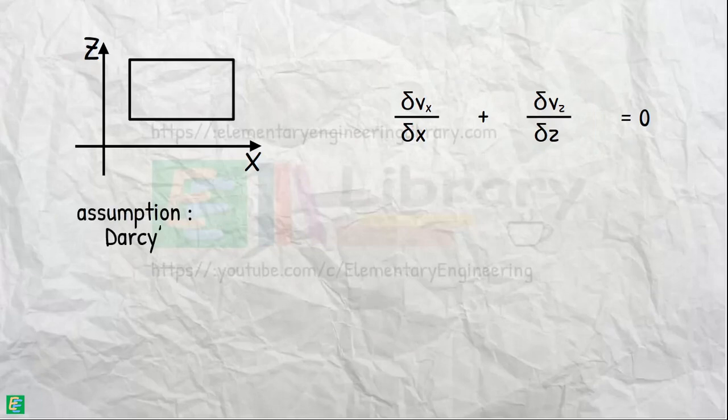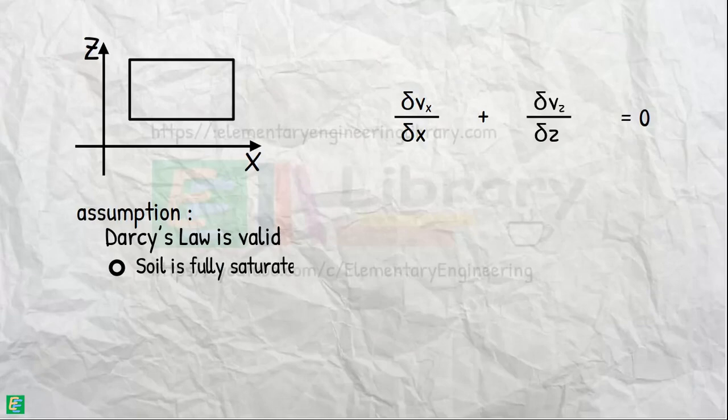If we assume Darcy's law is valid, which means the soil element is fully saturated and flow in the voids is laminar, then we can write the velocity of fluid equals permeability of the soil element times the hydraulic gradient across this element.